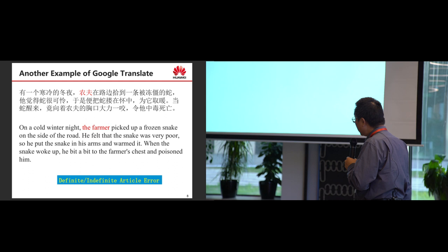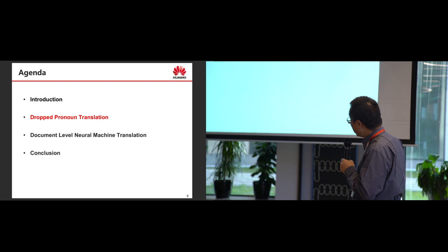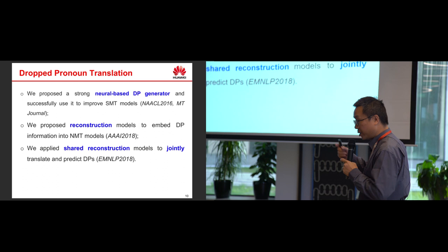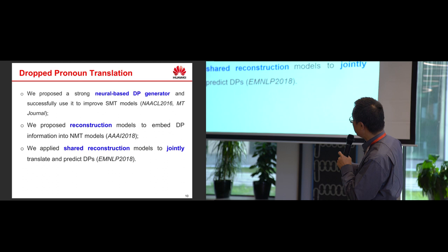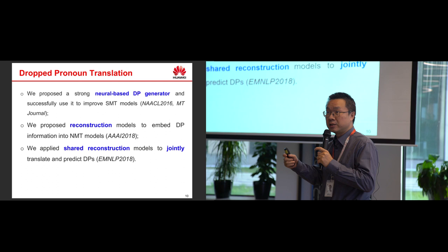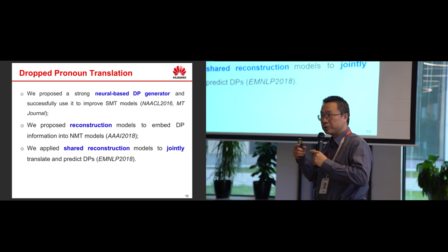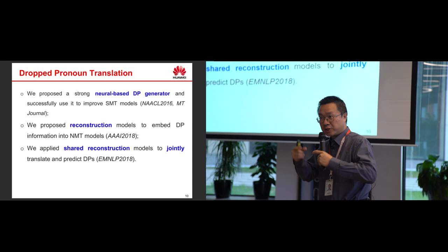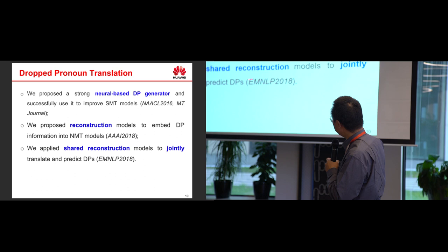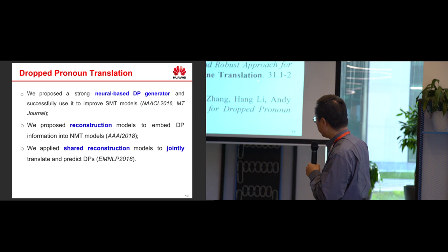The first part of our work is about dropped pronoun translation. We have done a lot of work on this — three pieces of work. First, we proposed a neural-based DP generator. As I said, in Chinese we usually drop pronouns, but we need to recover them before translation. We also proposed some other models in the neural machine translation framework. The papers have been published at EMNLP, ACL, and NAACL.